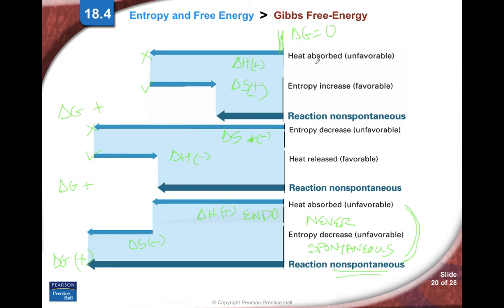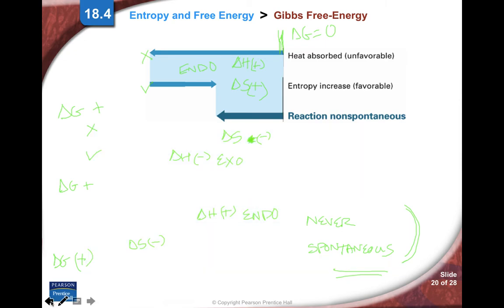Whereas these other situations, it depends on which one's bigger. Is the delta H of endo larger than the positive delta S, or is the delta H of exo larger than the negative delta S? You have to just look at them and understand what they're talking about. We do not have to calculate with this equation, but we have to understand the concepts.